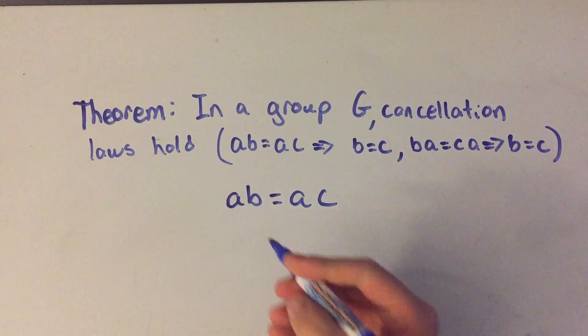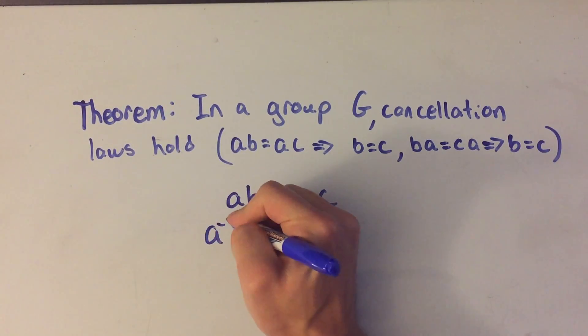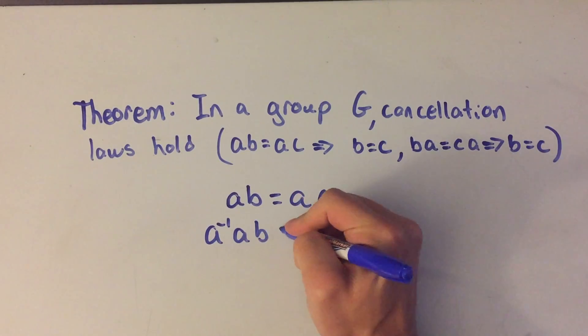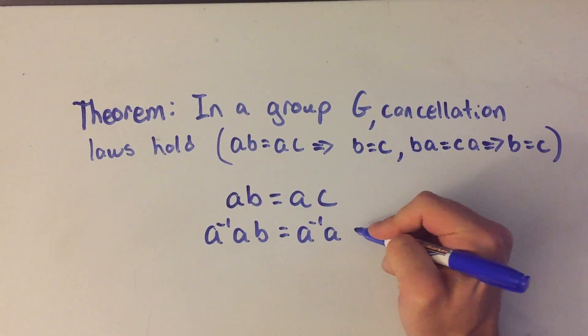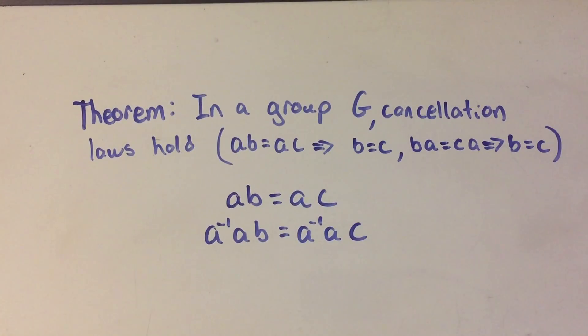Whatever I do to one side, I have to do to the other side and I have to make sure I'm doing it on the left on both sides. It's not just like you're used to in algebra where everything's commutative. We don't know if everything's commutative in this case. So if I multiply by a inverse on the left, I have to do on the left on both sides.